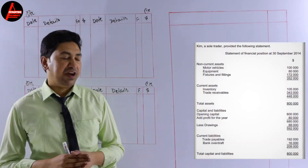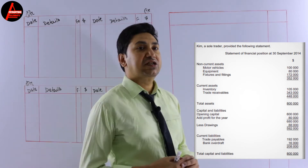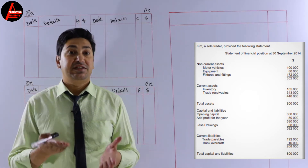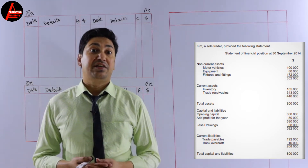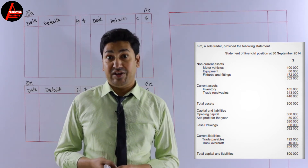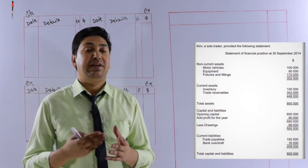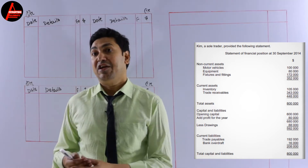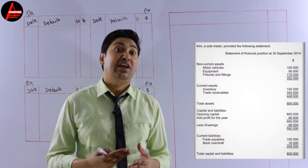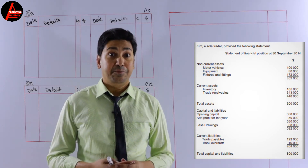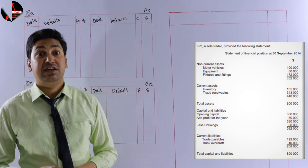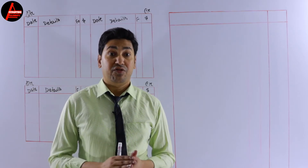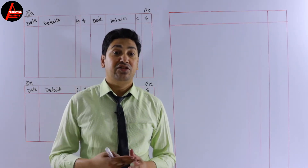Look at the question here. Kim, a sole trader, provided the following statements. This is the statement of financial position — the balance sheet — at 30 September 2014. Kim is a sole trader and he will now convert this business to a partnership business, meaning he's going to take one more partner into his business.